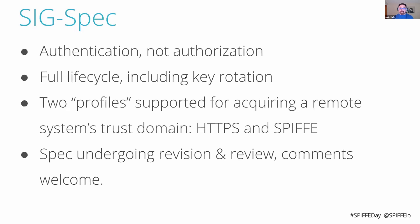We are addressing what we call a full lifecycle. We address how to bootstrap trust between one trust domain and a foreign trust domain, how to distribute that information within a trust domain to workloads so they're able to authenticate identities in a foreign trust domain. The specification covers the core elements required but does not specify at a granular level how that information needs to be distributed within a trust domain — this is about interoperability between trust domains.